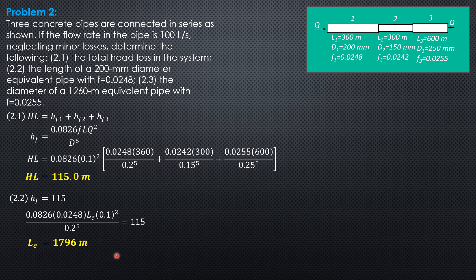Then the third, the diameter of a 1,260 meter equivalent pipe with friction factor 0.0255. So same principle, except that the equivalent length is 1260, you have the same head loss,